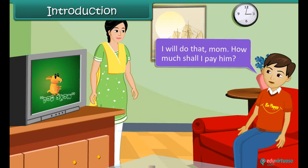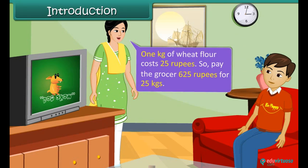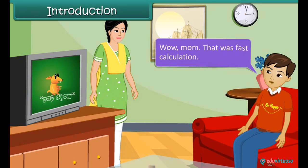How much shall I pay him? 1 kg of wheat flour costs 25 rupees, so pay the grocer 625 rupees for 25 kgs. Wow, mom! That was fast calculation.